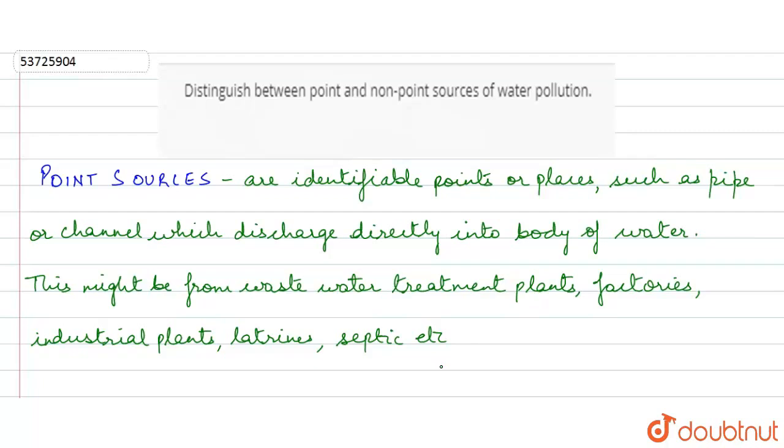Now, factories, industries, pipe discharge, septic tanks - these things are discharging. Now, what are your non-point sources?